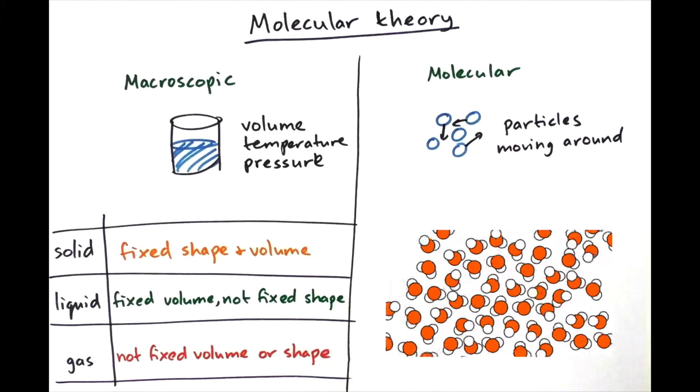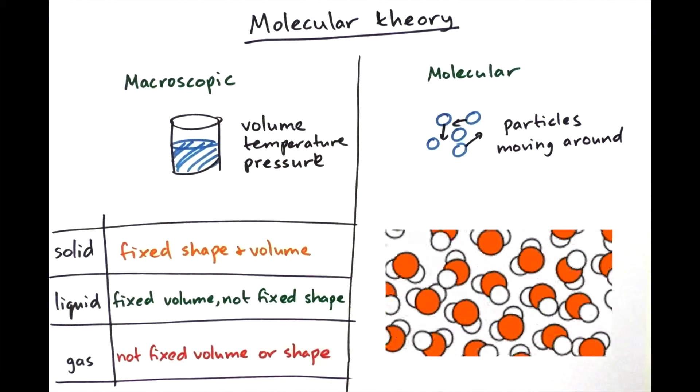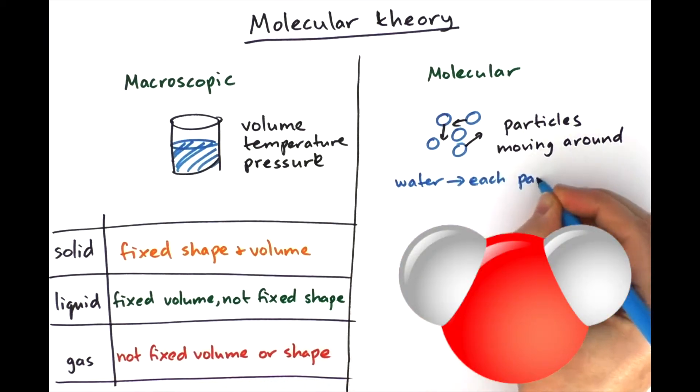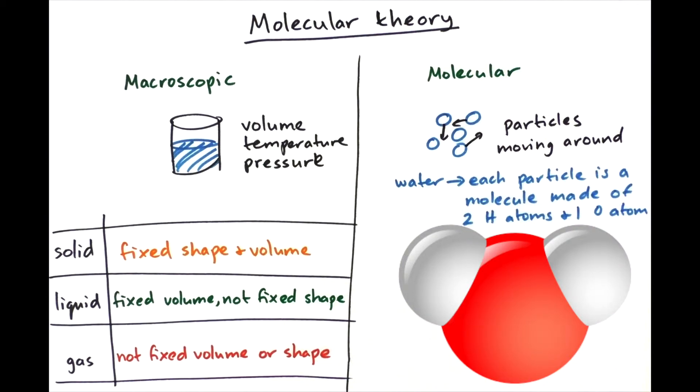So let's zoom in on one water molecule and see what it's made of. So it's going to look like this. So it's basically one big oxygen atom connected to two hydrogen atoms. Which is why it's called H2O.